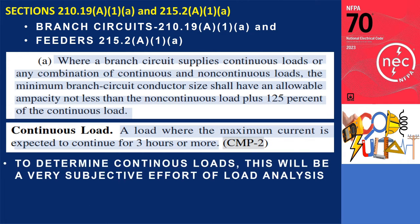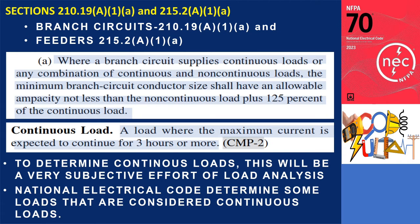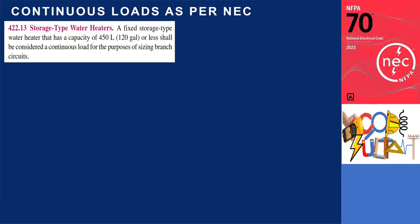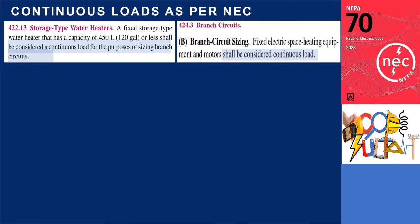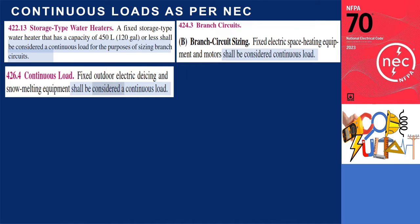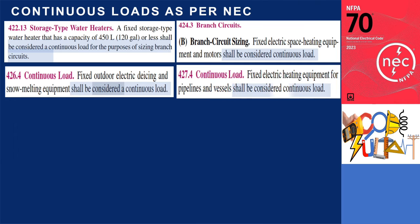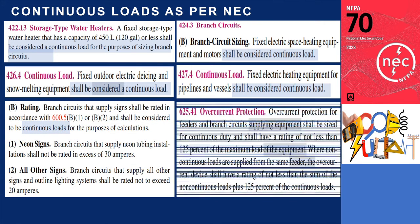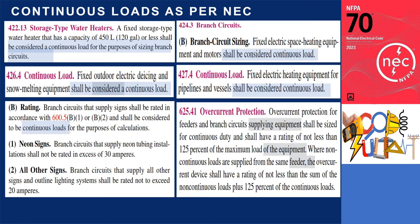For many loads, classifying them as continuous or non-continuous will be a very subjective effort at load analysis. The NEC does identify specific loads considered continuous. These include: storage-type water heaters with a capacity of 450 liters (120 gallons) or less per Section 422.13; fixed electric space heating equipment and motors per Section 424.3; fixed outdoor electric deicing and snow melting equipment per Section 426.4; fixed electric heating equipment for pipelines and vessels per Section 427.4; branch circuits supplying signs per Section 600.5; and electric vehicle charging loads per Section 625.41.